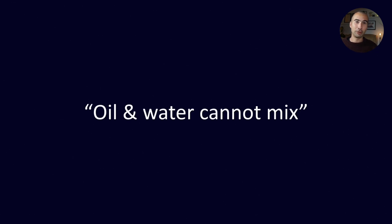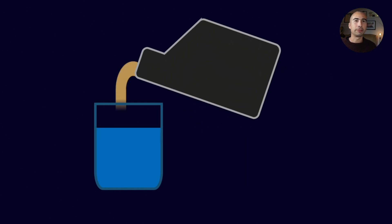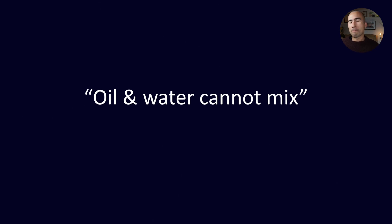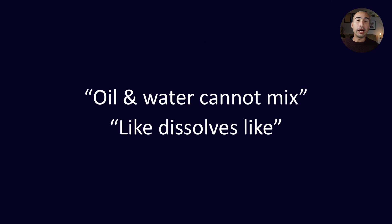My grandfather had this saying that he loved: oil and water cannot mix. When he said it, he was specifically referring to me and my girlfriends — the fact that we were too different meant we were not compatible. You've probably seen this in action. Maybe as a primary school student, or with your children, you've taken water and tried to pour oil into it. What generally happens is you get oil bubbles that coalesce, rise to the surface, and form a layer of oil sitting on top of the water. When we say oil and water cannot mix, what we're really saying is that like dissolves like, and oil and water are not like.